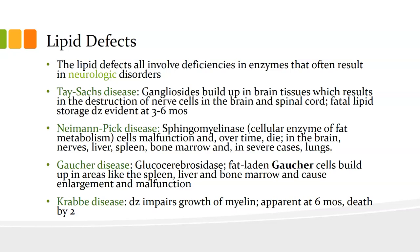First we have Tay-Sachs disease. Gangliosides build up in the brain tissue, which results in the destruction of nerve cells in the brain and spinal cord. It is a fatal lipid storage disease that is evident at three to six months.